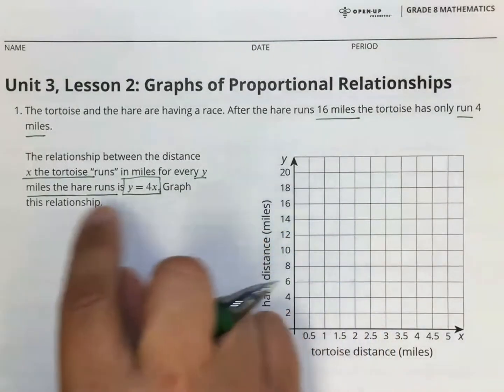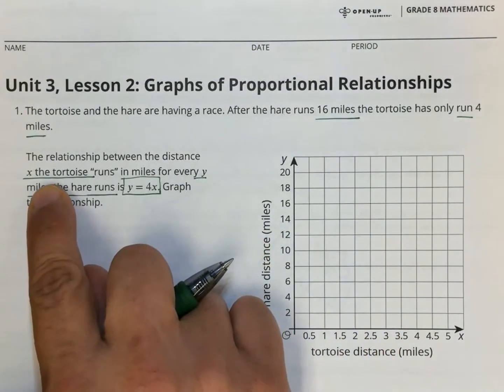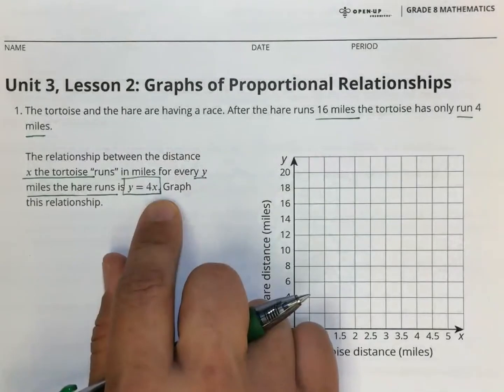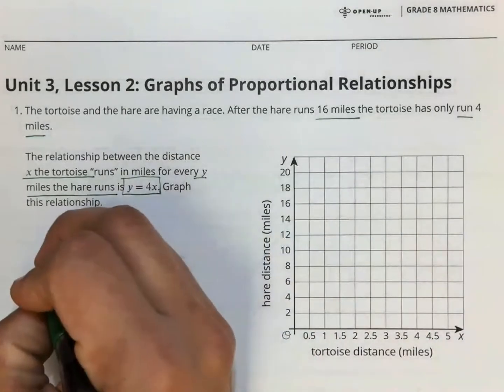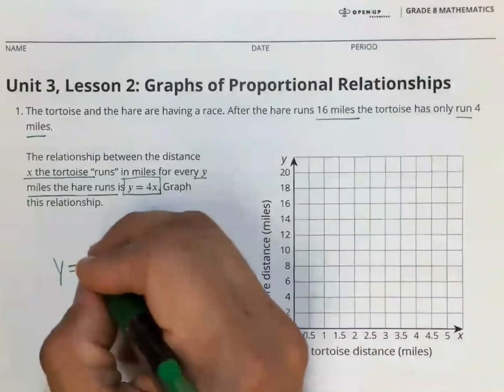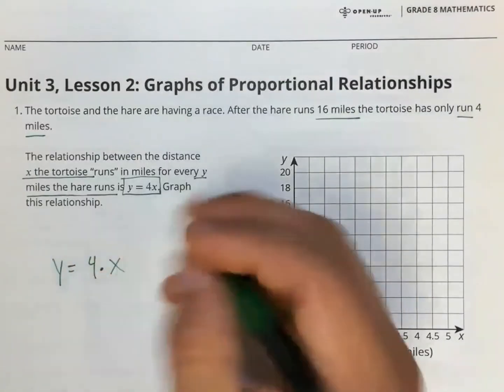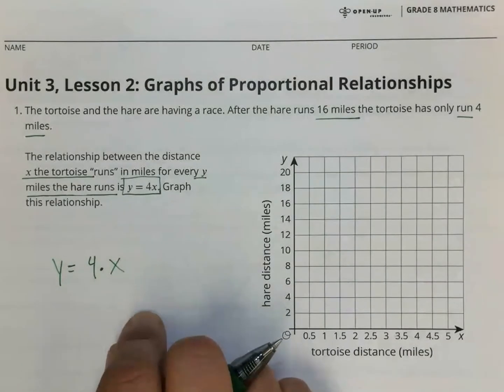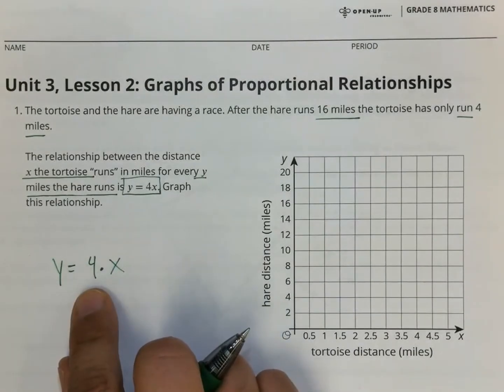x is the distance that the tortoise runs and y is the distance that the hare runs. So let's look at what this equation is saying here. The hare is taking the number four times the amount that the tortoise runs. So the hare runs four times more. That's why our equation is four times x.